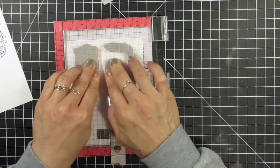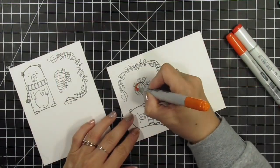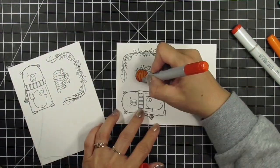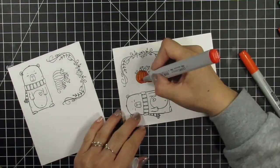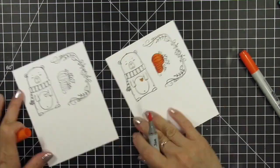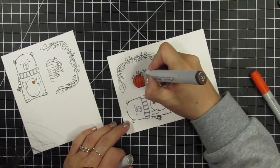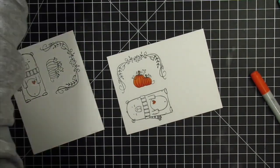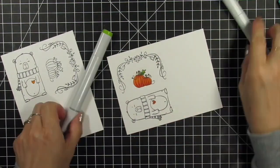Now I'm ready to color the images with Copic markers. The Tailored Expressions color chart provides Copic colors that match their inks, so I choose colors that match the inks I plan to use on the stencils. If you're interested in using the same colors, I'll have them listed in the supply list below. I'm going to put on some music and speed through the coloring process.